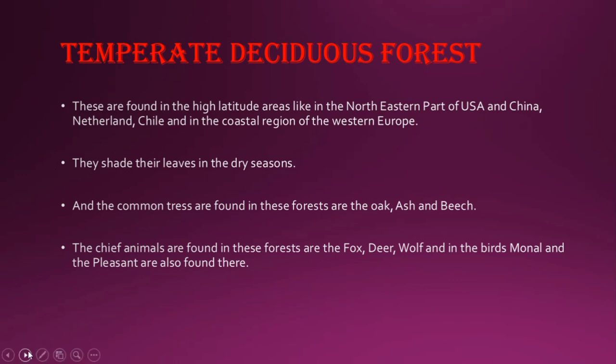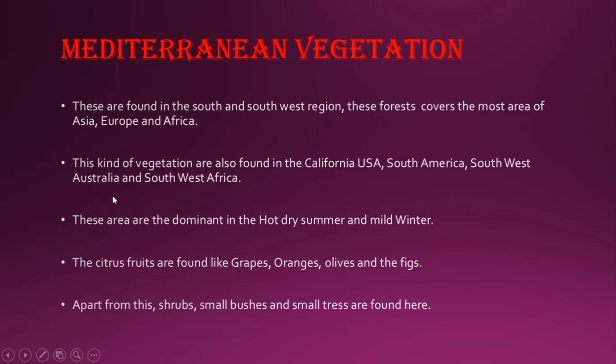Now let's talk about Mediterranean vegetation. These are particularly found in the south and southwest regions, covering large areas of Asia, Europe, and Africa. This kind of vegetation is also found in California USA, South America, southwest Australia, and southwest Africa. These dominant plants thrive in hot, dry summers and mild winters.